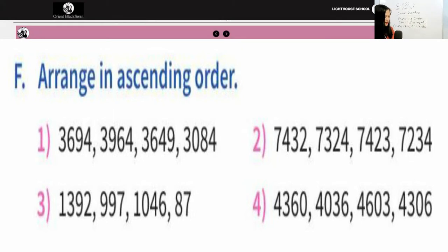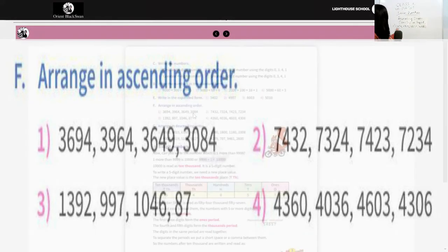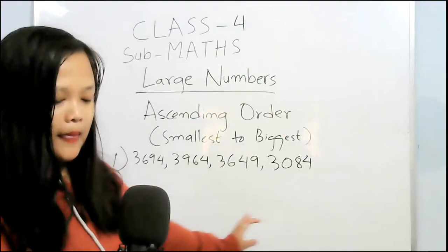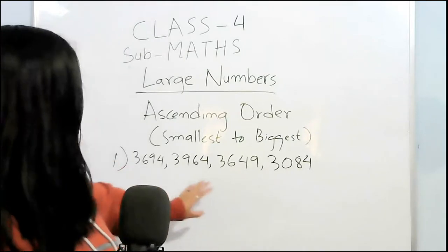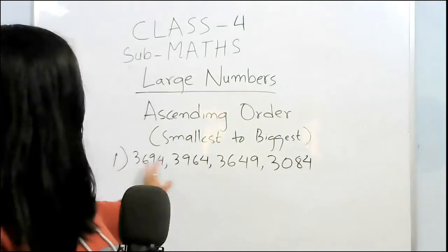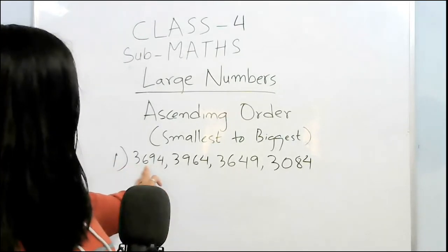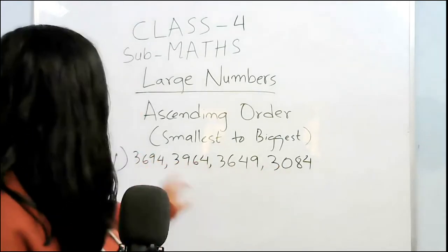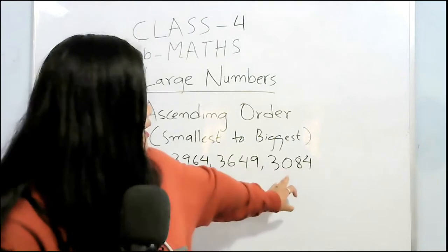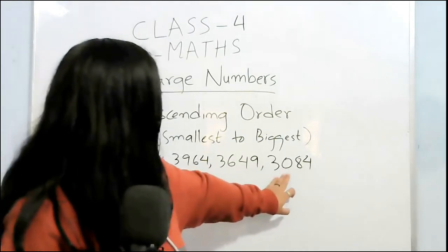This is question number 1. And how to do, you have to look at the first digit of each number. Here all are starting from 3. So the next one you have to look at again, the second number. Here is 6, here is 9, here is 6, and here is 0. So 0 is less than 6, so this one should be the first one.